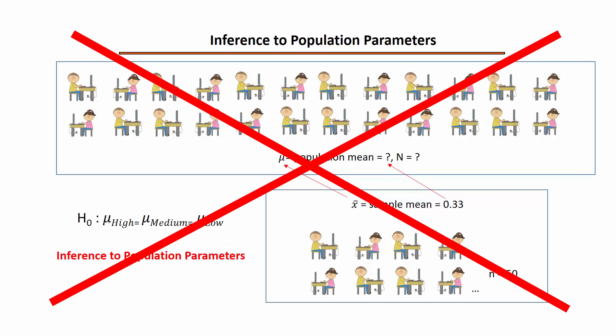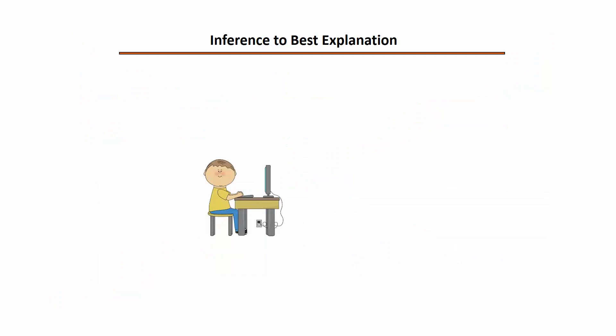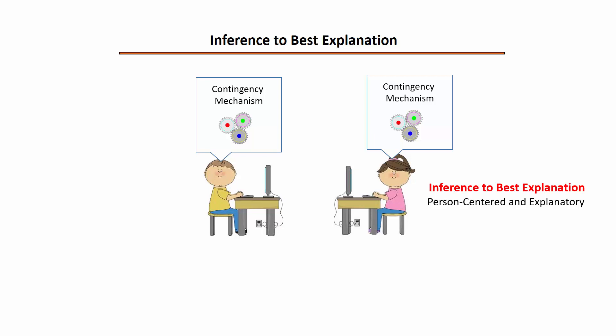But this is not the inference being sought by the authors of the study — consequently, these were not the appropriate analyses to conduct. What the authors were instead seeking was an inference to best explanation. We can observe a student's responses to the word-color pairs and tally his number of errors. What we infer to be underlying his responses is a contingency mechanism that explains why he made the greatest number of errors in the low contingency condition. We do not observe the mechanism directly; we only see the responses of the students and infer the existence of the mechanism as the best explanation.